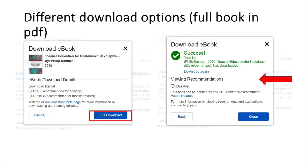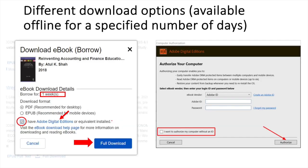In some instances you can download the entire book, allowing you to access it offline. Once downloaded, the book will be stored on your device and you can find it in your downloads area for continued access. In other cases there are stricter measures in how offline use is offered.